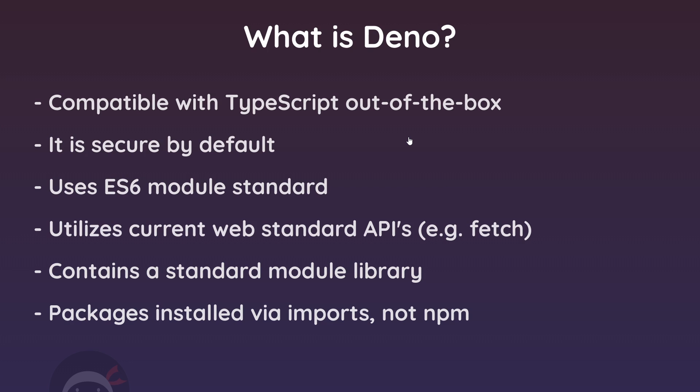Secondly, it's secure by default, unlike Node.js which isn't. That means you'll need to manually allow permissions for scripts to access things like your file system or network. You do this by adding flags to your run commands in the terminal. That's good because it means it's much harder for malicious code to manipulate your file system or access parts of your computer without you knowing. Node isn't secure by default, so you didn't need to do this when you used Node.